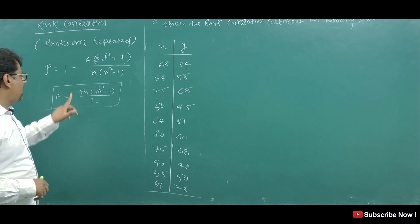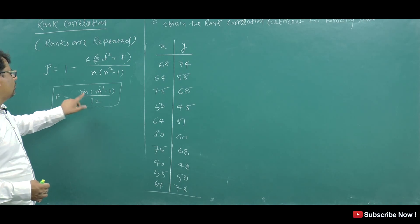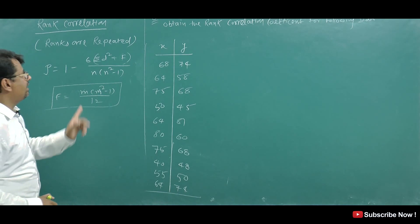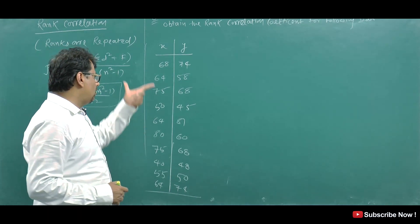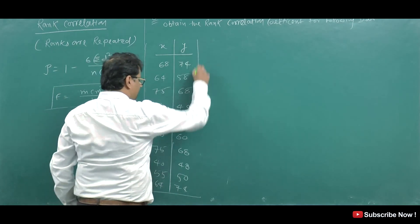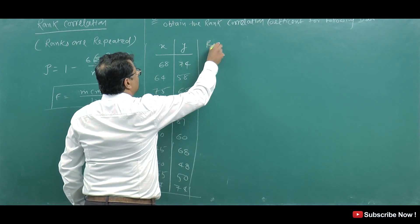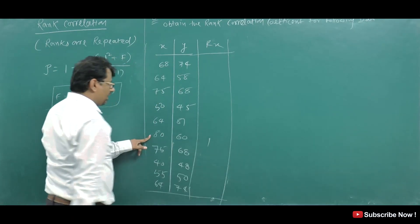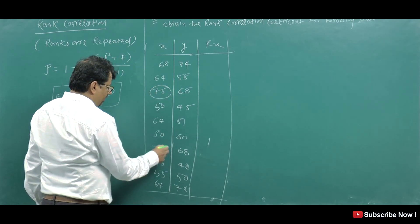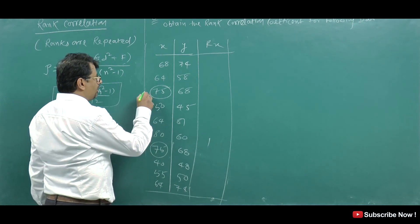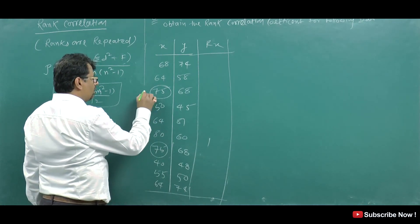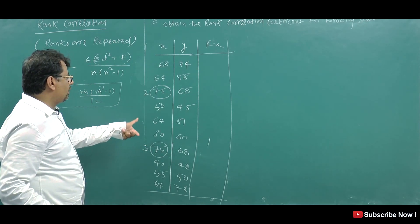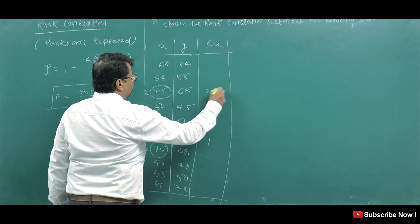Now we have a question. We have to obtain the rank correlation coefficient of the following data with values of x and y. For rank of x, the highest value gets rank 1. Here 75 appears twice — it would take ranks 2 and 3 — but since it is repeated, we take the average rank: 2 plus 3 divided by 2 equals 2.5. So both occurrences of 75 get rank 2.5.